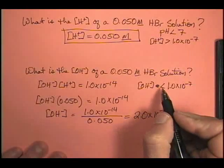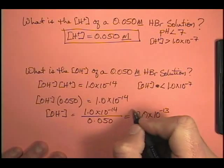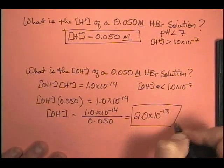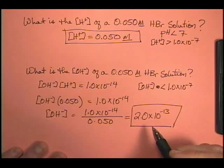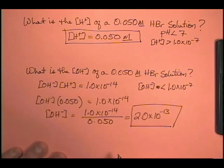All right, does that meet our criteria? Yeah, 10 to the minus 7, yeah, that's bigger than 10 to the minus 13th. So this is a reasonable answer, especially since this is an acidic solution. You would expect a very low hydroxide ion concentration.